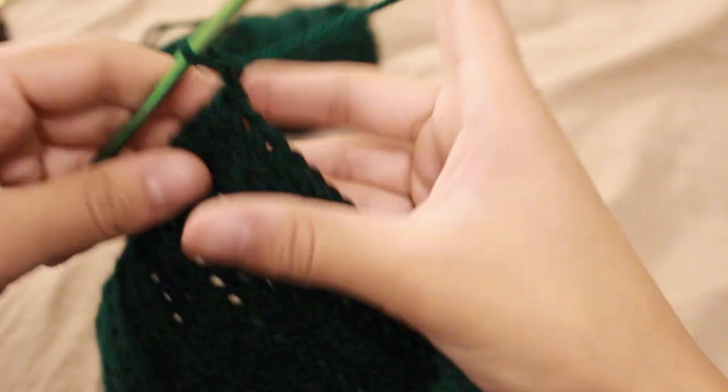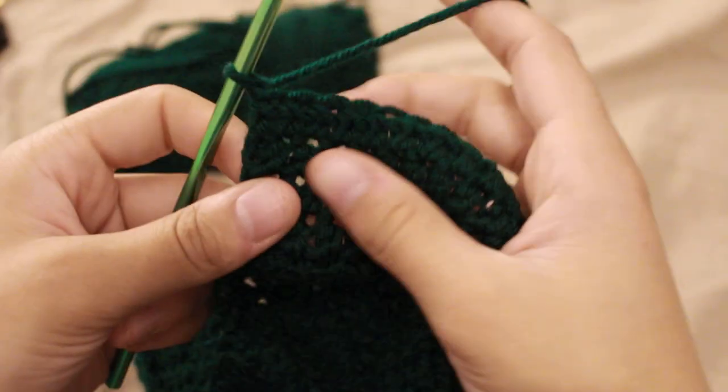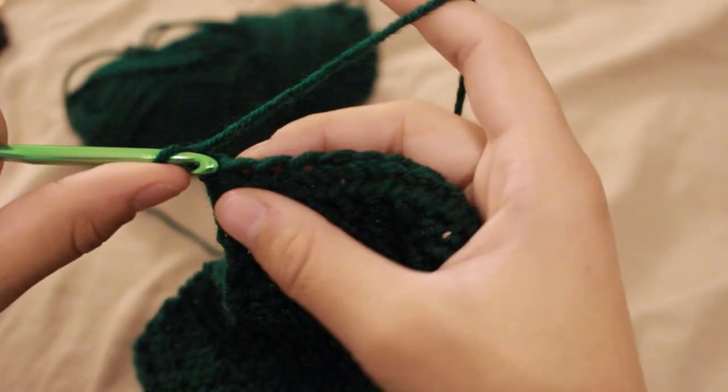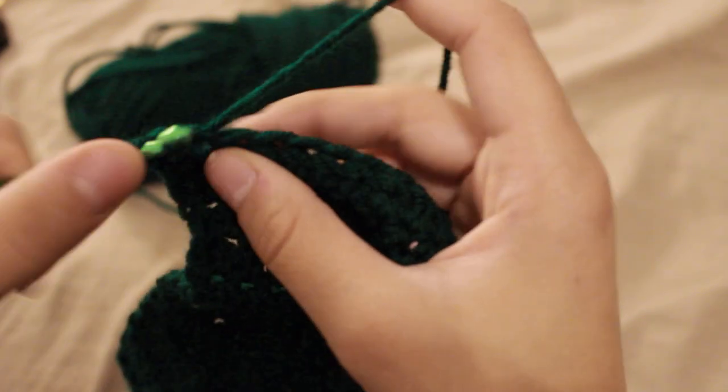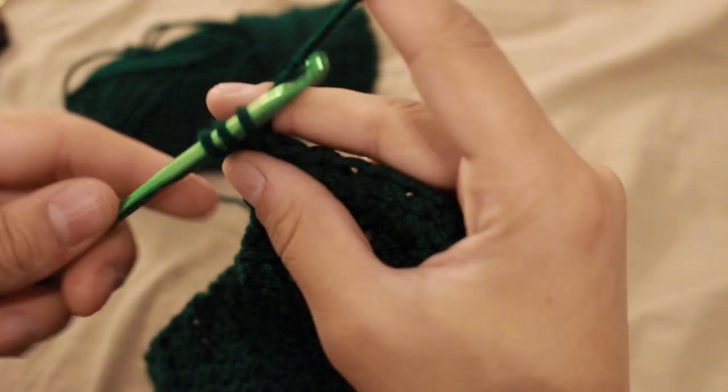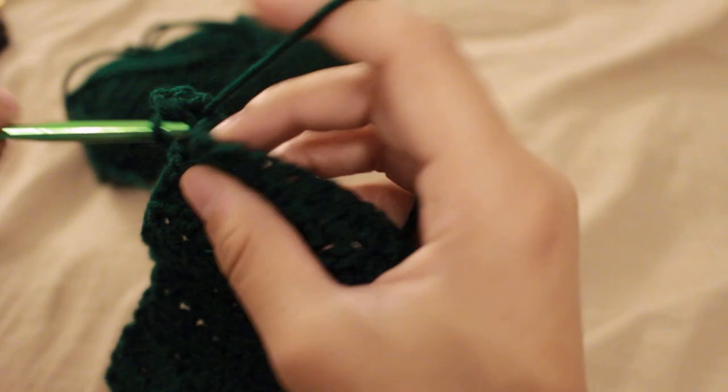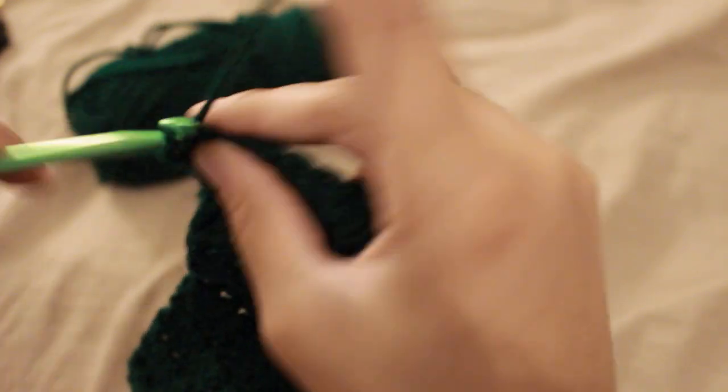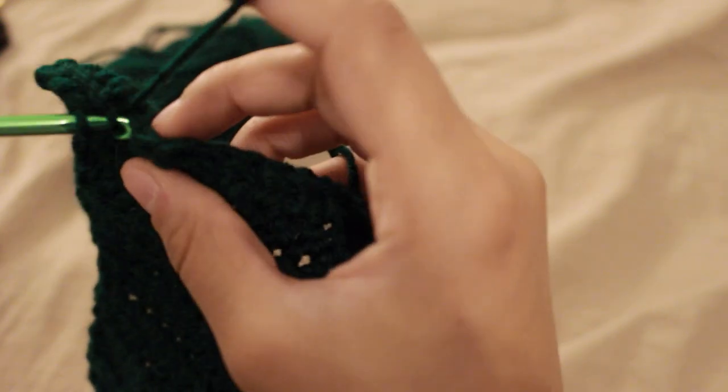To begin decreasing on row 29, you're going to stick your hook into the first stitch space, and bring up a loop. Then in the second space, you'll do the same. So you'll have three strands on your hook. Then you're going to yarn over and pull all the way through. Then in the third stitch, you're going to continue like you normally would and do a half double crochet.